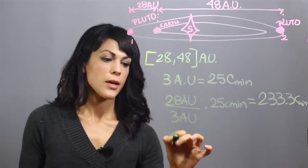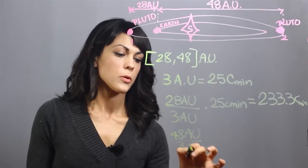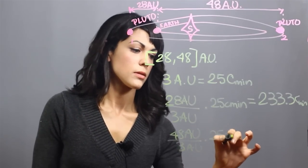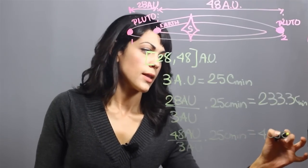And now, 48 astronomical units divided by 3 astronomical units times 25 light minutes gives us 400 light minutes.